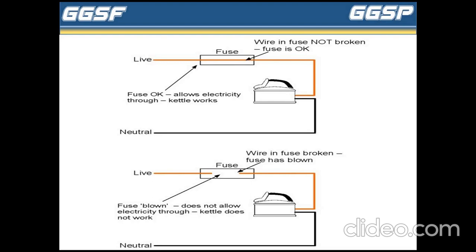Now, what do you mean by fuse rating? Fuse rating is the current needed to blow or break the fuse. We can calculate fuse rating by a simple formula: fuse rating equals watts per volt multiplied by 1.25. Every appliance has a manual in which the power of the appliance is mentioned. Using this information, you may find the fuse rating for any application or device.